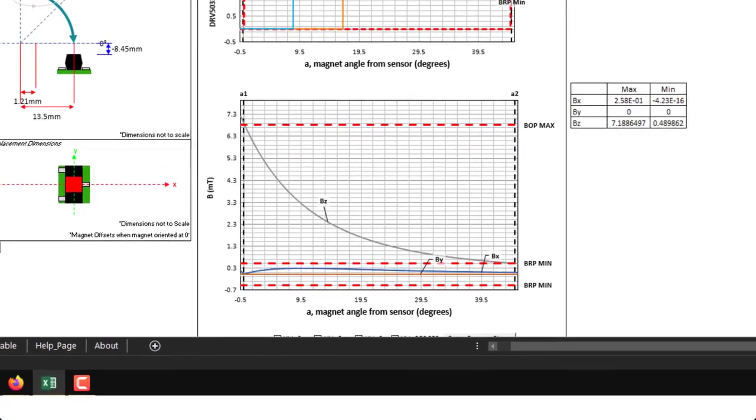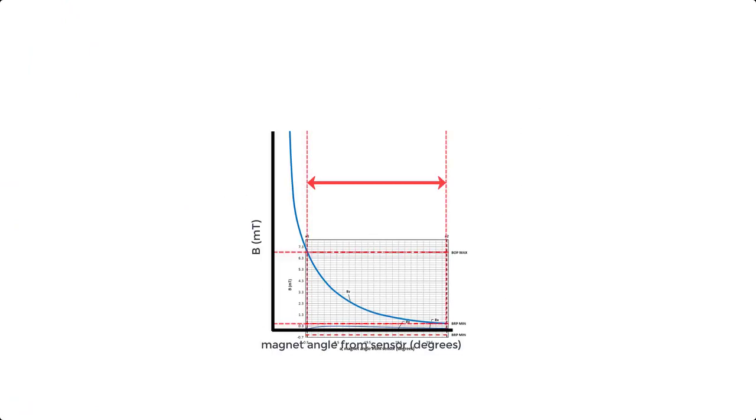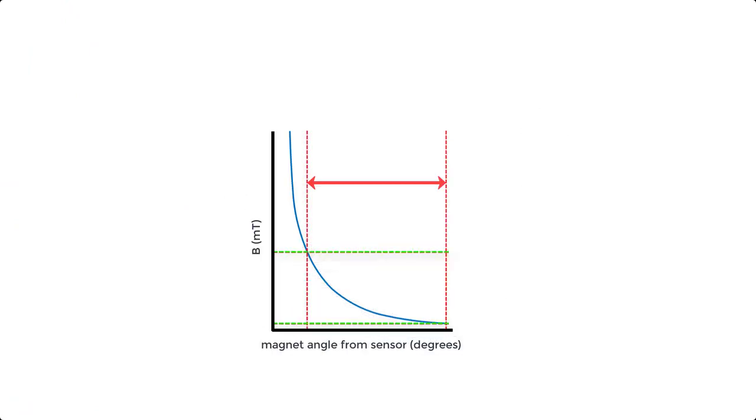By exploiting the nonlinear behavior of magnet field strength, we see that an equivalently spaced hysteresis range moved higher on the curve will lead to a smaller transition range.